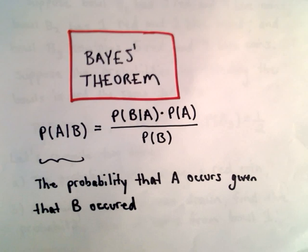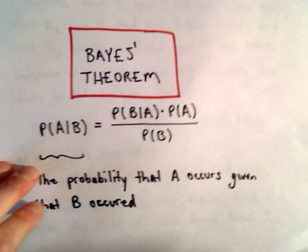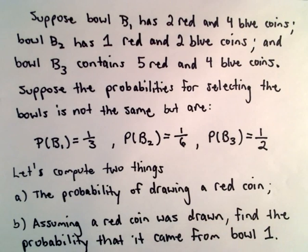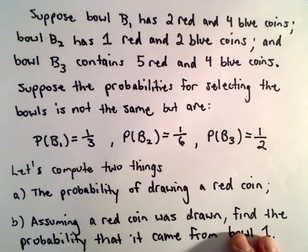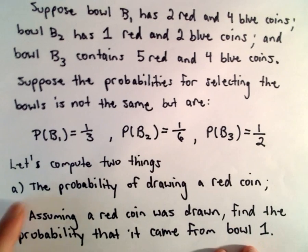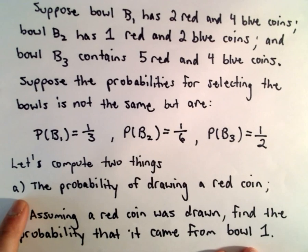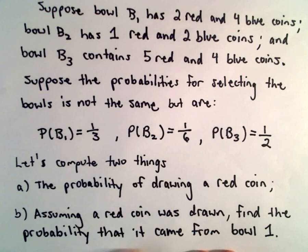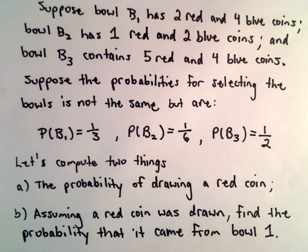Okay, here I'm going to do part B of our Bayes Theorem example. The example we had three different bowls with red and blue coins in each one. Part A, we figured out the probability of actually drawing a red coin. Part B, we're going to assume that a red coin was drawn. We want to find the probability that it came from bowl one.